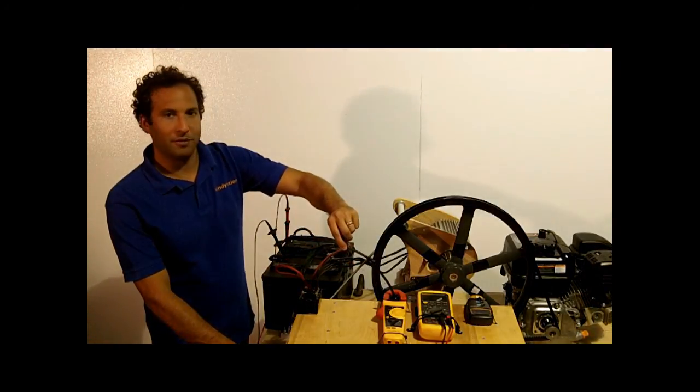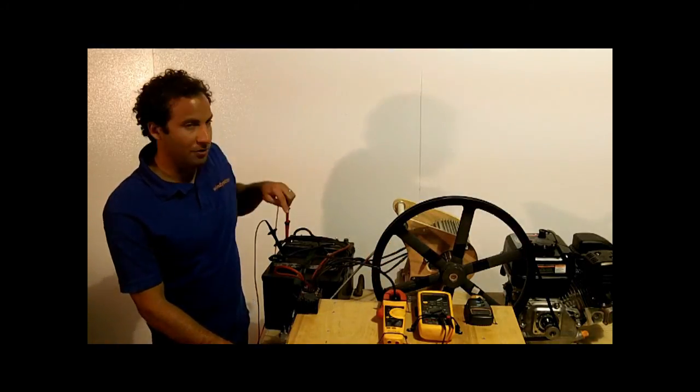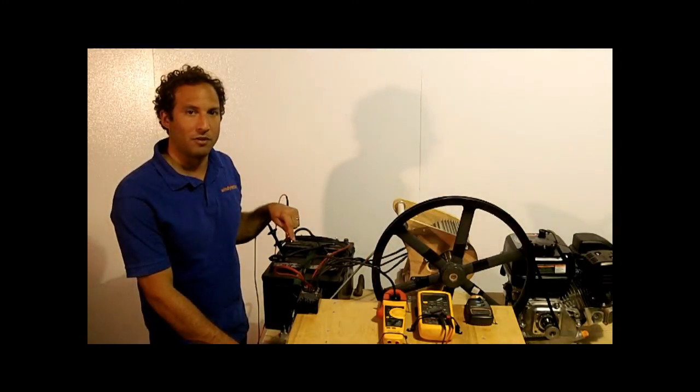The negative DC output of the rectifier travels through this amp meter, where it's then hooked up directly to the negative terminal of the 12 volt battery bank.